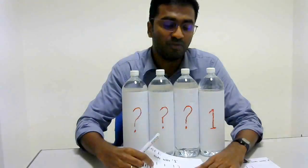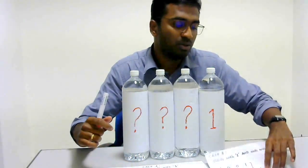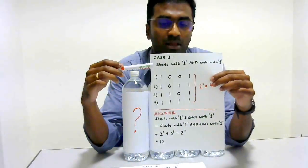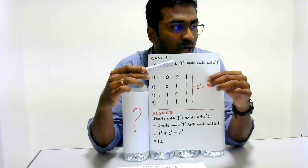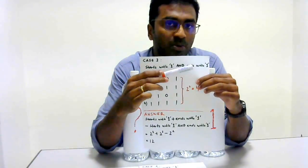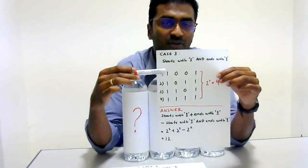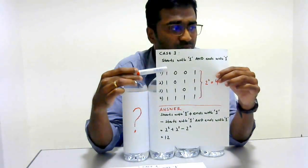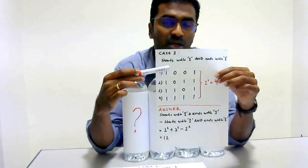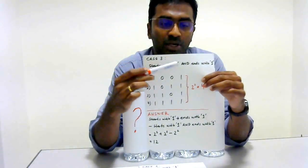So we need to count for case 3. Case 3 is all the strings that start with 1 and end with 1. So we have 4 strings that actually have this condition.